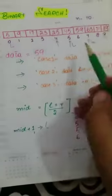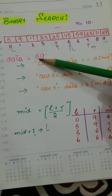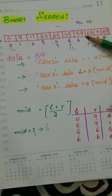Now we have to compare our data with mid. 59 was our data and our mid was 63. So 59 is less than 63.